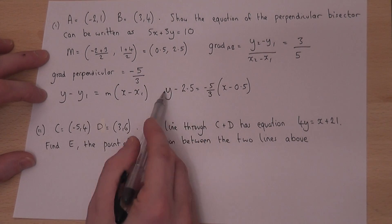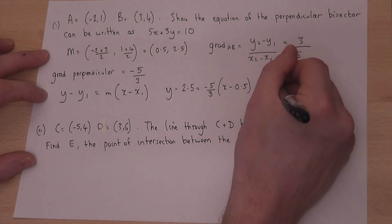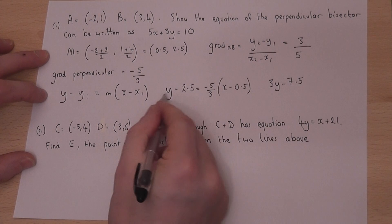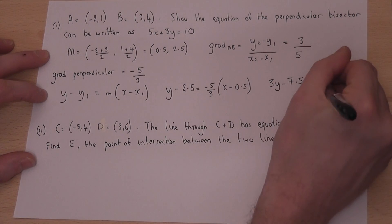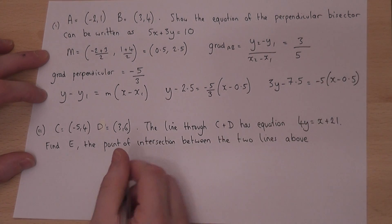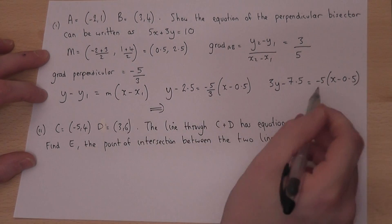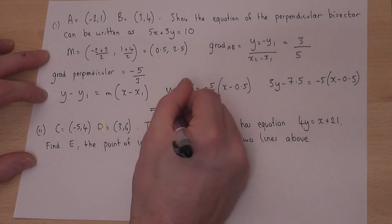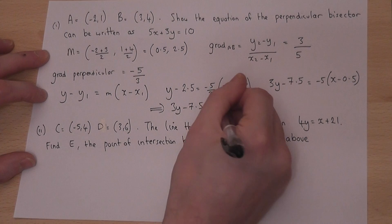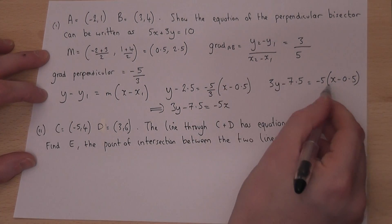Well, if we times by 3 to begin with, we get 3y minus 7.5, so I've times both terms there by 3, equals minus 5x minus 0.5. Right, so therefore, if I now expand again, so 3y minus 7.5 equals minus 5x, two negatives get positive when times together, so plus 2.5.